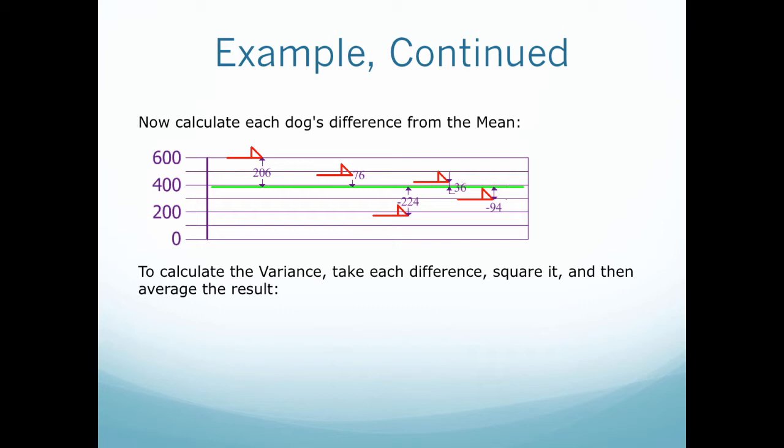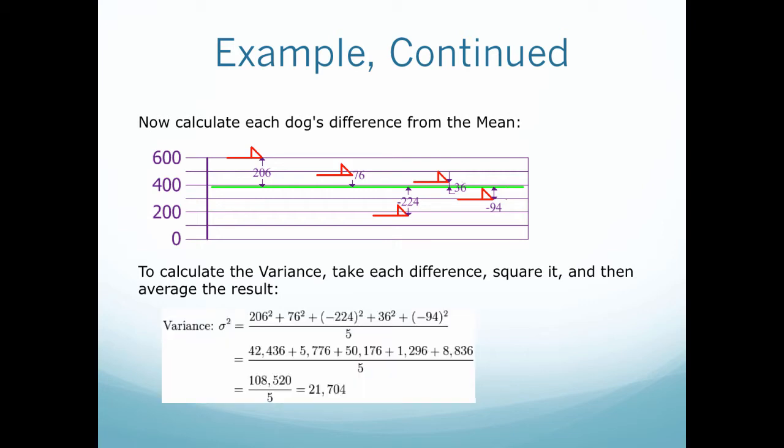To calculate the variance, we would take each difference, square that difference, and then average the result. This gives you the variance. So that would look like this. Variance equals sigma squared, which would be equal to 206 squared plus 76 squared plus negative 224 squared plus 36 squared plus negative 94 squared, all divided by 5.